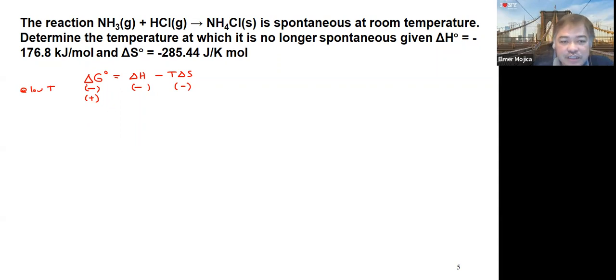So we need to get the temperature wherein the value will be negative. What's the boundary between negative and positive? It equals zero. So if we assign the value of zero here, rearranging this equation, we'll have T equals delta H divided by delta S.